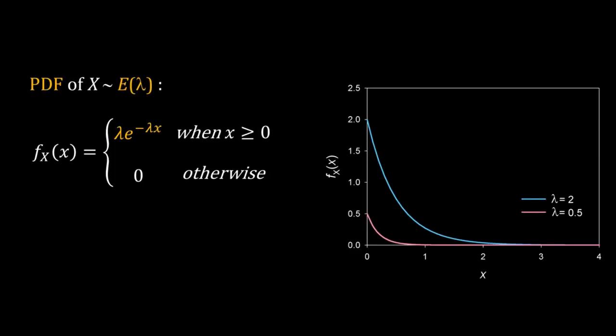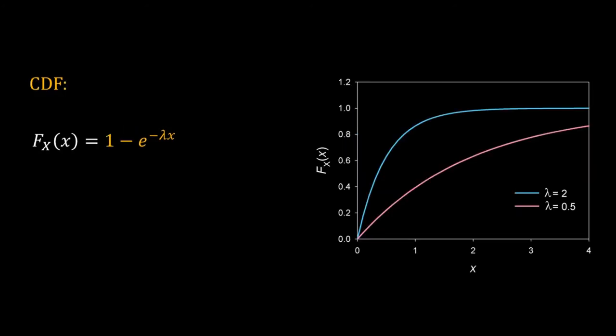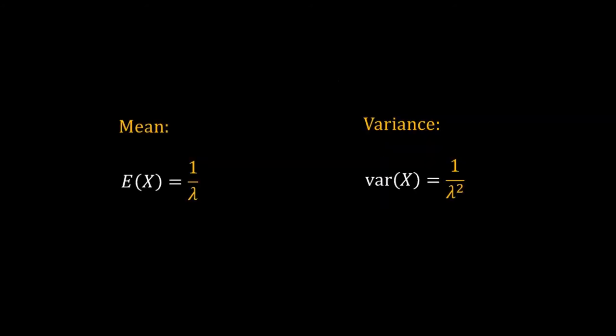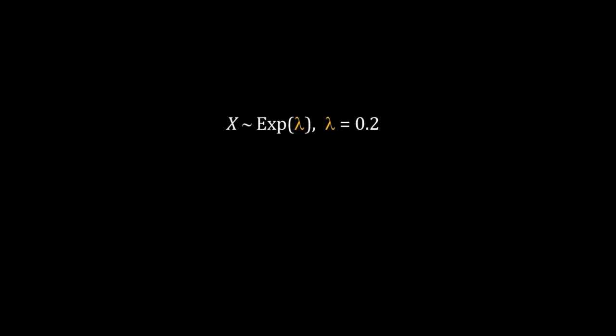Another continuous distribution we will use frequently is the exponential distribution. The PDF of the exponential distribution is λ·e^(−λx), where X ≥ 0. Lambda is called the rate parameter; it decides how fast the exponential function decays. The PDF is shown for two values of lambda. The CDF for the exponential distribution is 1 − e^(−λx). The mean is 1/λ and the variance is 1/λ².